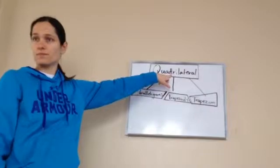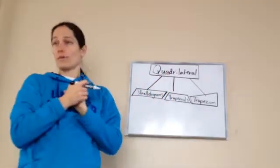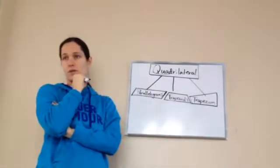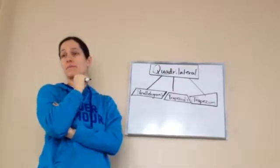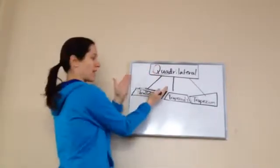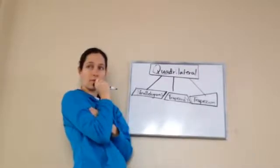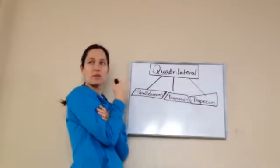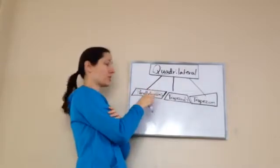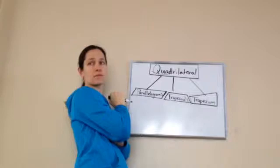Tell me, what is a quadrilateral? A four-sided figure. What is a parallelogram? All four sides are parallel — they have a pair, so these two are, and then these two are. What is a trapezoid? Trapezoid is where only two of the lines are parallel. And what is a trapezium? Trapezium is when all of them are not parallel.